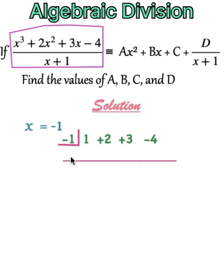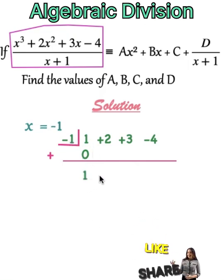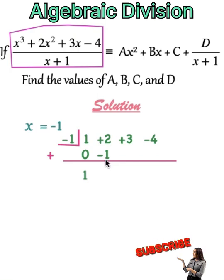Now, minus 1 times 0, we have 0. 1 plus 0, 1. Then minus 1 times 1, we have minus 1. 2 plus minus 1, we have plus 1. Minus 1 times plus 1, we have minus 1. Plus 3 plus minus 1, we have plus 2.